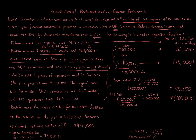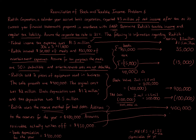The accounts receivable item usually gives students the most trouble. Radish uses the reserve method (allowance method) for book purposes. Additions to reserves are $400,000, which is the bad debt expense taken for the year — add that back. For tax purposes, the direct write-off method is used, so the $450,000 actually written off is the deductible amount — subtract that. The net adjustment is negative $50,000.